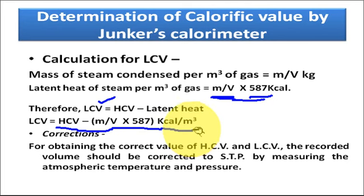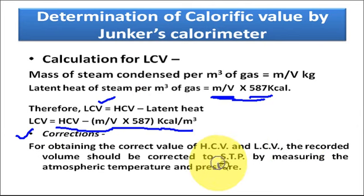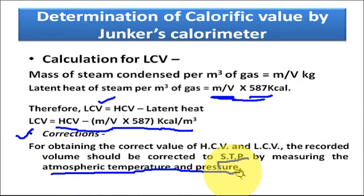Regarding corrections in the Junkers calorimeter: unlike the bomb calorimeter, not many corrections are required. The only correction needed is that the recorded volume should be corrected to STP by measuring the atmospheric temperature and pressure. That is all about the determination of calorific value by Junkers calorimeter.